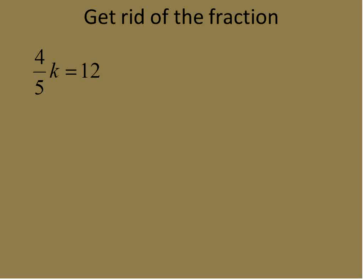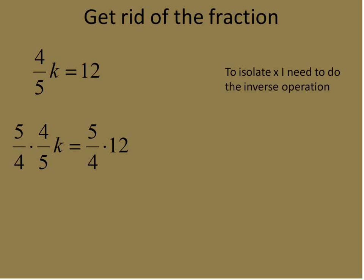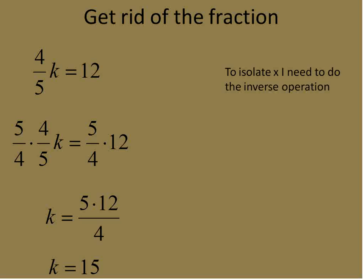With this one, we want to get rid of that fraction. This will be the last question. When you're getting rid of fractions, you multiply times the reciprocal. I'm going to multiply both sides of this equation times 5/4. 5/4 times 4/5 will equal 1, and 1k is just k. The right side of the equation: 4/5 times 12 is the same as 4/5 times 12/1. We're just multiplying 5 times 12 and dividing by 4. 5 times 12 is 60. 60 divided by 4 is 15.